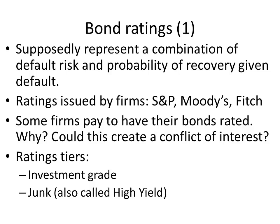If I loan someone money to buy a car and the car is the security, the probability of recovery given default is fairly good because I could repossess it. But if I loaned money for a vacation and they decided not to pay after, probability of recovery would be fairly low. The ratings are issued by ratings firms: Standard & Poor's, Moody's, and Fitch. We've seen these firms make mistakes — for instance, many mortgage-backed securities that led to the latest financial crisis received top ratings by all three firms, when in fact they were far riskier than the top rating would represent.